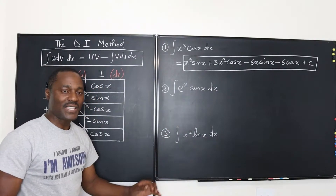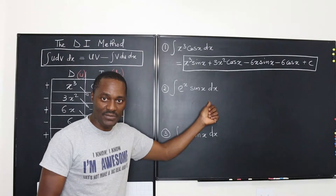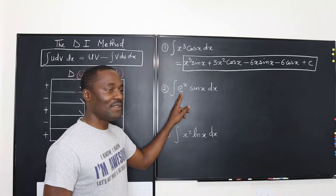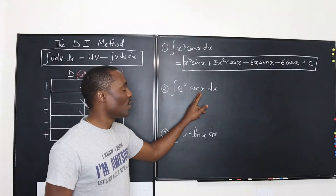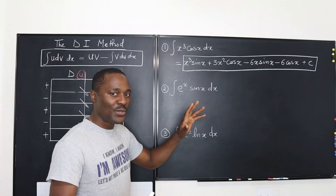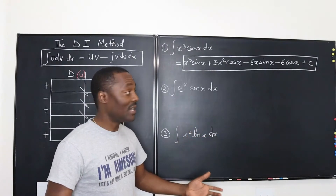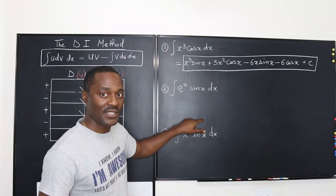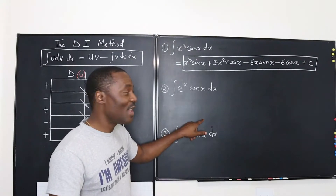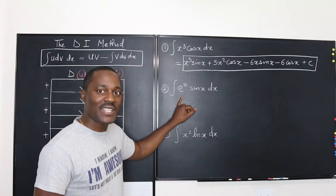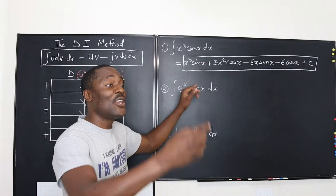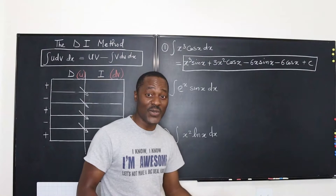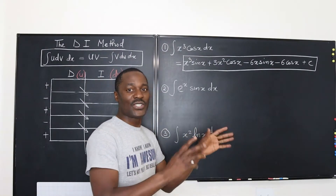Let's take the second one. What should you take as U and what should you take as V? Whenever you do not have a polynomial, you want to choose wisely because you have to decide if it's E to the X or sine X you will make your U. In this case, it does not matter, because sine X will keep alternating whether you're integrating or differentiating — it goes from sine to cosine to sine. For E to the X, it does not change; whether you integrate or differentiate, you keep getting E to the X. So it doesn't matter which one you choose; they behave in a similar way.